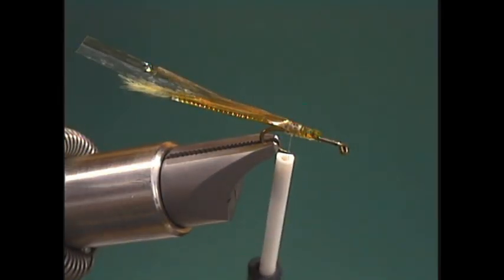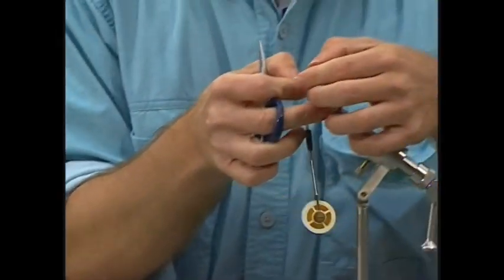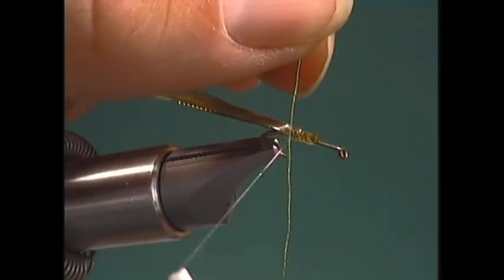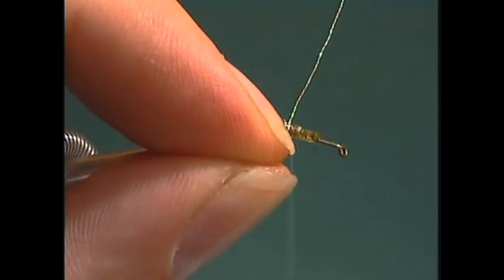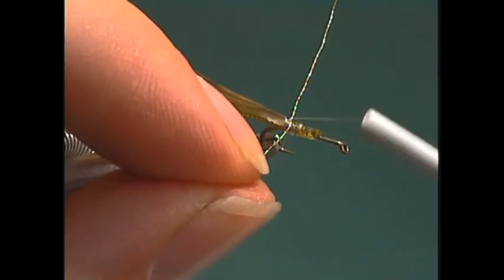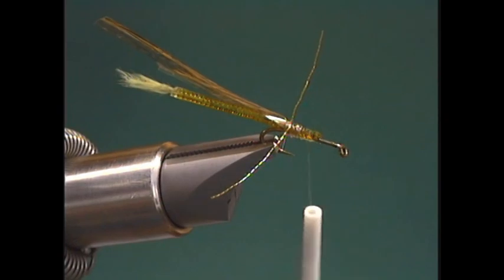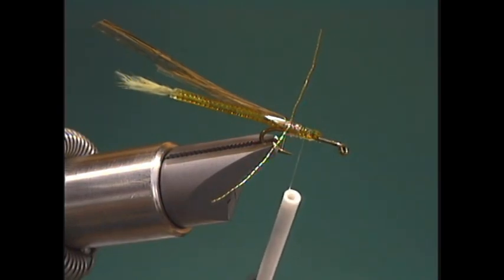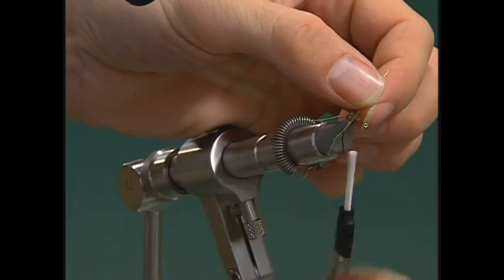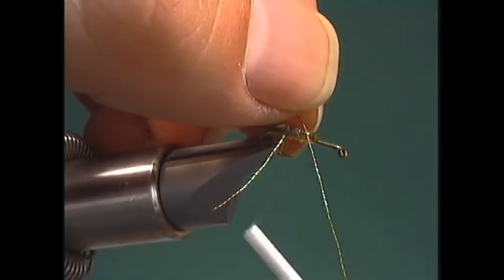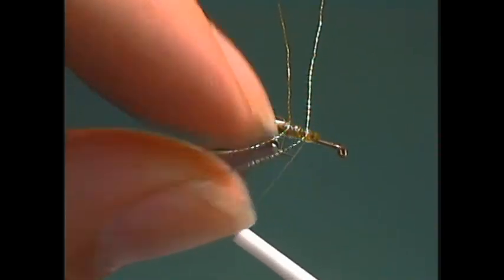Now we're ready to tie in the legs. We'll use some of these sparkle damsel legs. We're going to use a series of figure eights to tie it in. Since we're going to be using epoxy, we only need a couple turns to hold it in place. Bring the thread forward a little bit. We'll grab another leg here. Again, we're going to use a couple figure eights to tie it down with. That's all we need.